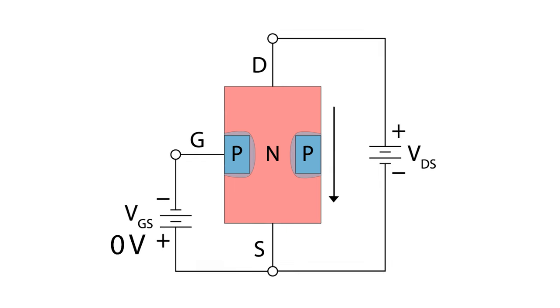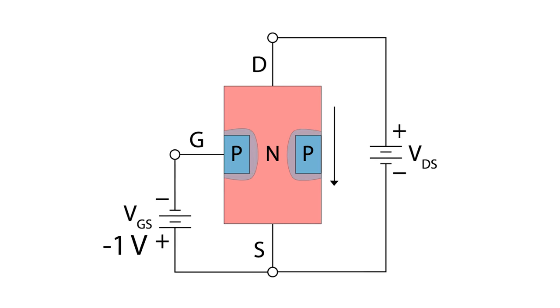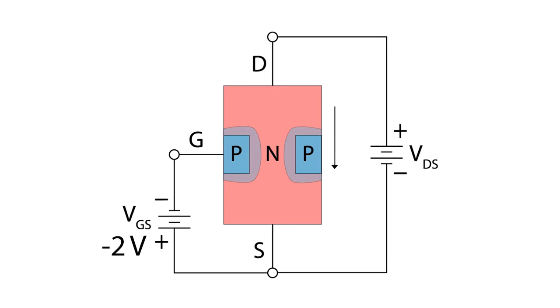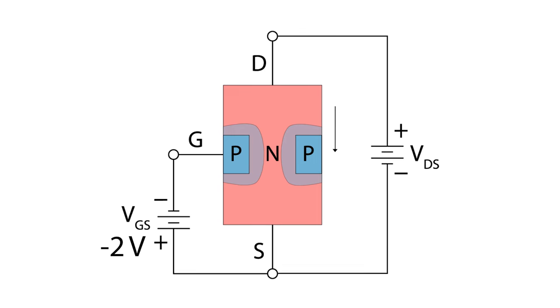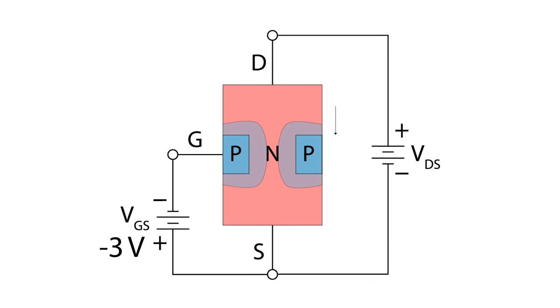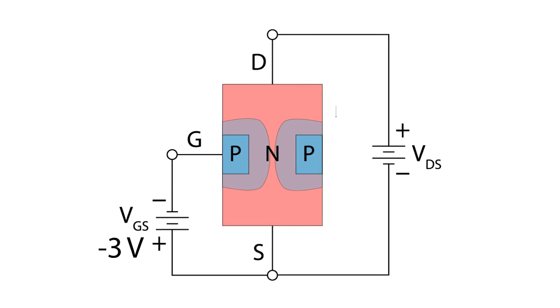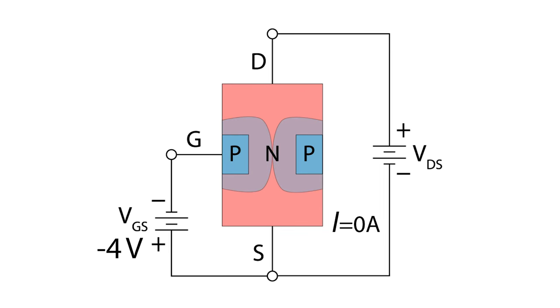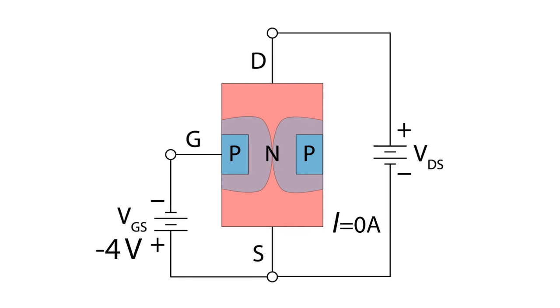The more biased the gate becomes, the more the depletion region grows, the narrower the channel becomes, constricting the flow of current through the channel. The channel can continue to narrow until the current is cut off completely. The voltage difference at this point is known as the cutoff voltage.